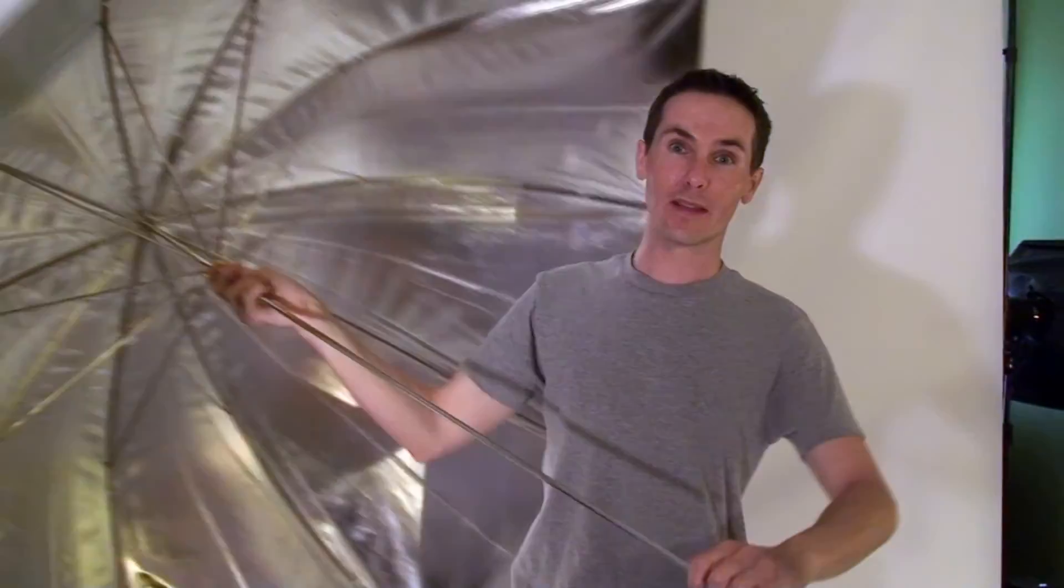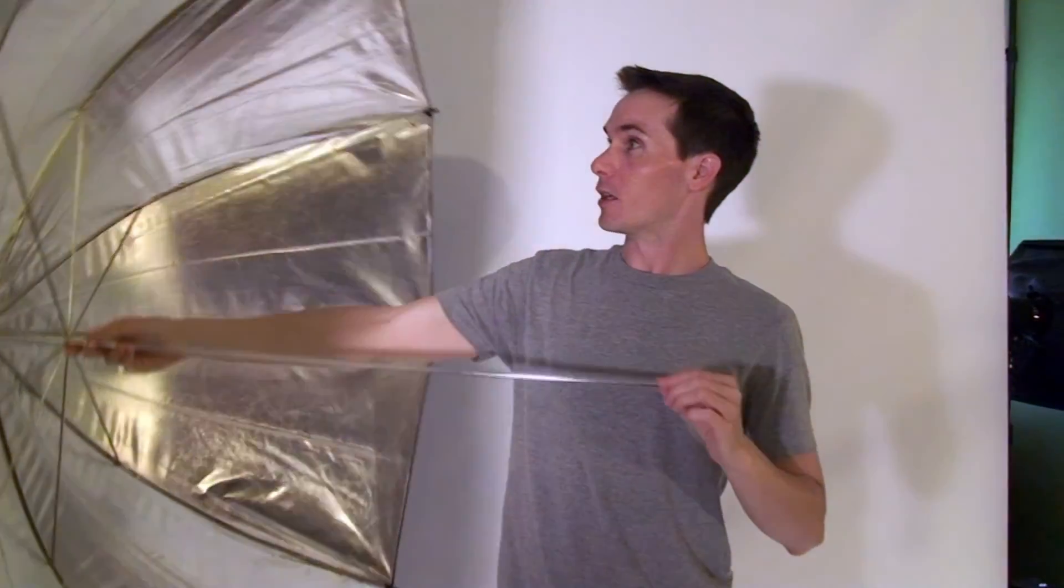Today we're going to be using a 60 inch reflective umbrella. This thing is quite large, parabolic umbrella. I'm going to put it on the Alien B and we'll have it in similar positions to the last lighting modifier examples. This is going to be slightly different. I'm going to place the head in the same position, but since it's an umbrella, it's going to be further away just because I'm going to be shooting at it and it's going to be reflecting back at me. So let's take a couple test shots and see how this is different.